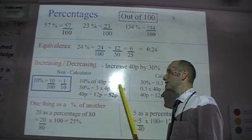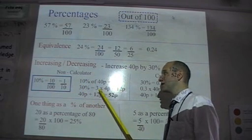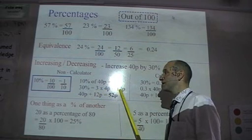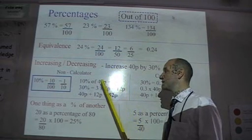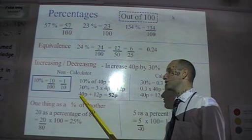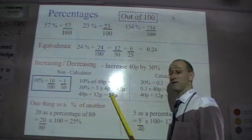Now, if we know 10% is 4, we know 30% is three times as many. Three-fours are 12. So then we were increasing 40p by 30%, so we just add the 12p onto the 40p and get 52p.